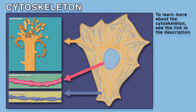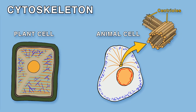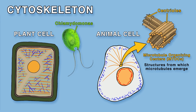Plant and animal cells both also have cytoskeletons, which feature microtubules, intermediate filaments, and microfilaments. However, these structures are arranged differently in plant and animal cells. Centrioles are present in all animal cells, but are only present in lower plant forms such as chlamydomonas. Centrioles are microtubule organizing centers, which are structures from which microtubules emerge. Plants don't have centrioles, but instead have many small nucleation sites.